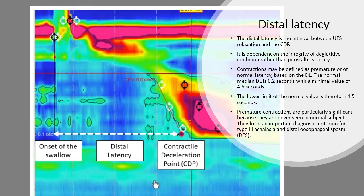Contractions may be defined as premature or of normal latency based on the distal latency. The normal median distal latency is 6.2 seconds with a minimal value of 4.6 seconds. The lower limit of the normal value is therefore 4.5 seconds.